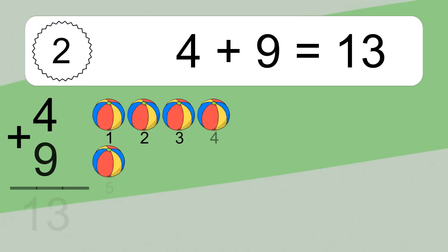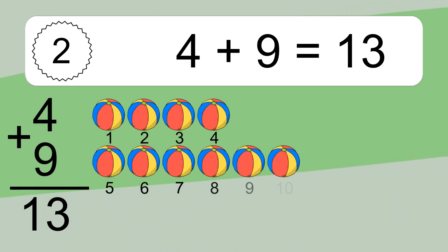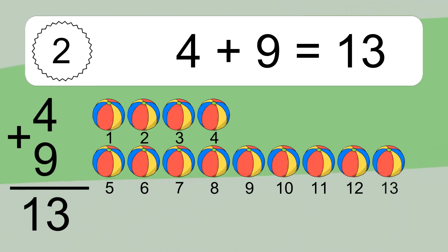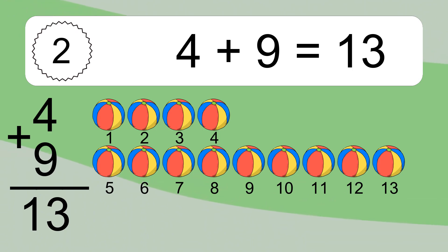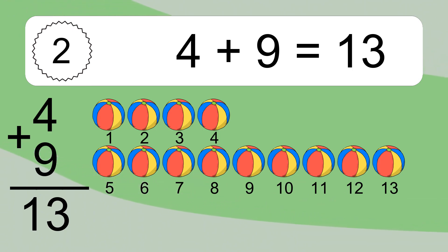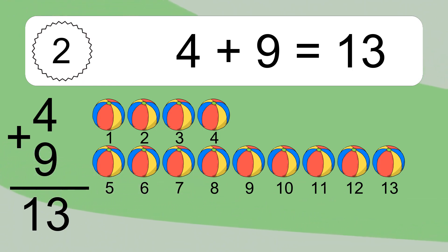4 plus 9 equals what? 4 plus 9 equals 13. Let's count it: 1, 2, 3, 4, 5, 6, 7, 8, 9, 10, 11, 12, 13.